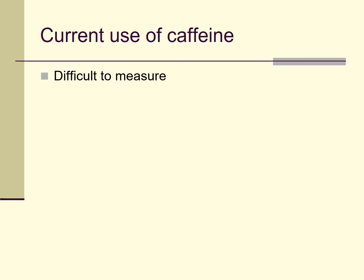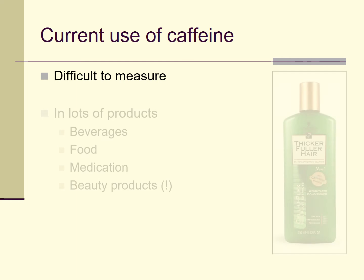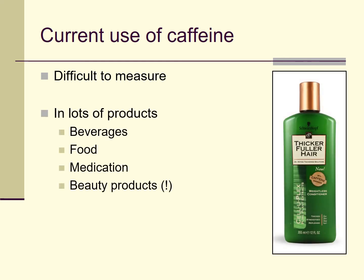The other thing that makes it difficult to measure caffeine use is that caffeine is in a lot of products. It's obviously in some beverages we're familiar with, in a fair bit of food, in a lot of medications — if you look at the ingredients on many over-the-counter medications, especially painkillers and cold remedies, you'll often see that they include caffeine. And it's weirdly even in some beauty products. This is actually a picture of a shampoo which is supposed to give you thicker, fuller hair, with a seal on the front saying 'new caffeine energizer.'